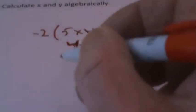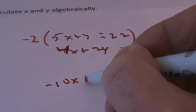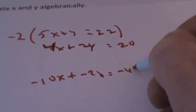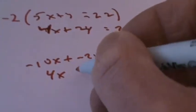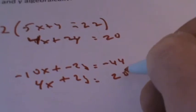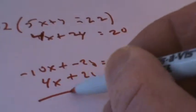So the first thing we'll do is we're going to get negative 10x plus negative 2y is equal to negative 44. So we'll write down below 4x plus 2y is equal to positive 20. Now we can actually solve this by adding these things up.